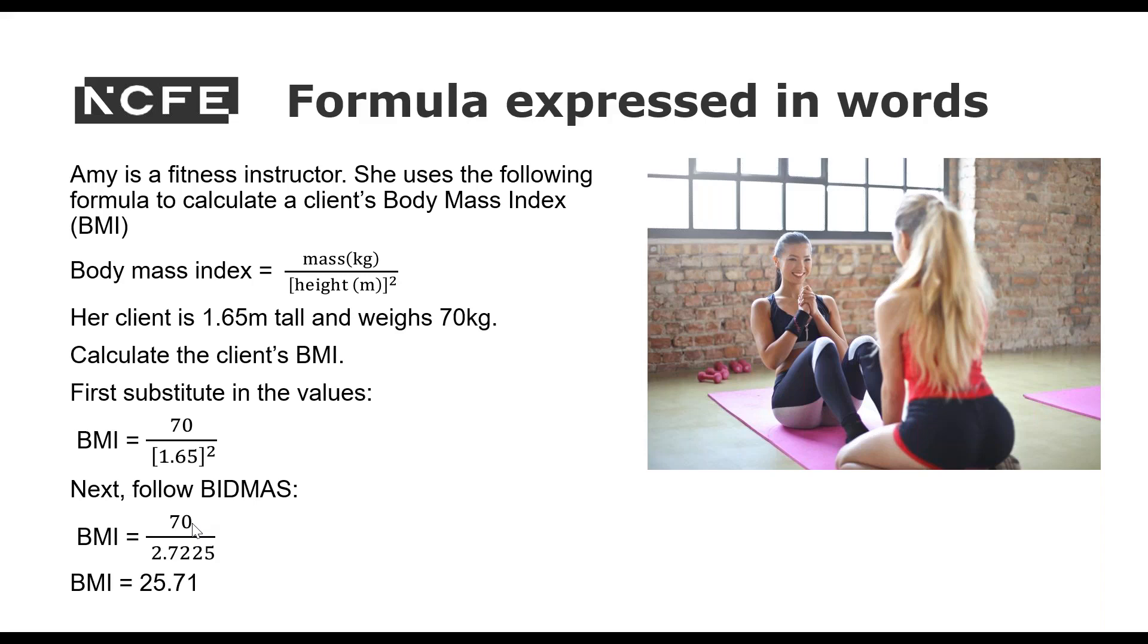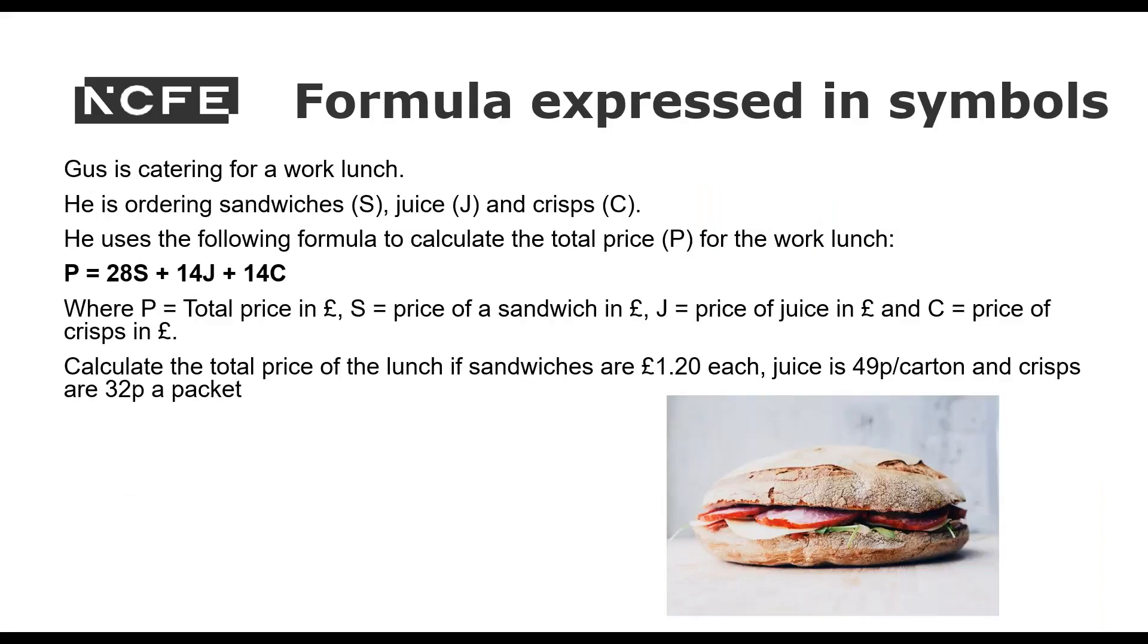Here we've got one. We're now moving on to formula expressed in symbols. It's a very simple formula and we can solve it in the same way by substituting in the values first. So Gus is catering for a work lunch. He's ordering sandwiches S, juice J and crisps C. So it's nice here because we're not writing the full word. So it's shorter. So algebra is a good thing. He uses the following formula to calculate the total price P for the work lunch. P equals 28S plus 14J plus 14C.